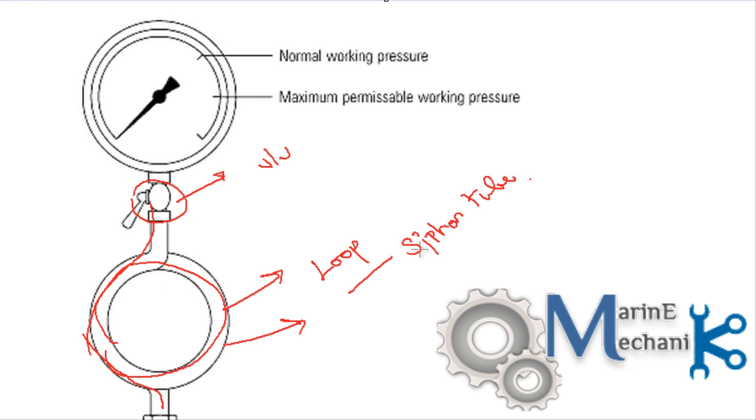The main reason why a siphon tube is provided is to safeguard the pressure gauge, just to avoid or prevent the pressure gauge, the bourdon gauge, getting damaged. Now let's see how does it prevent.